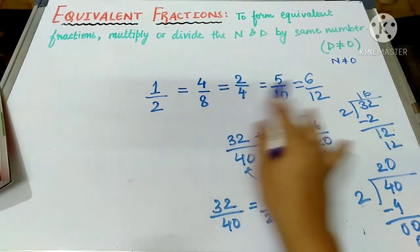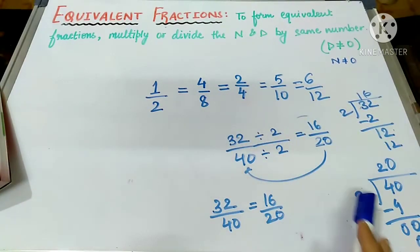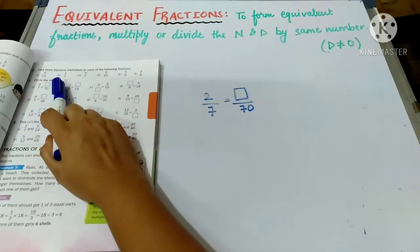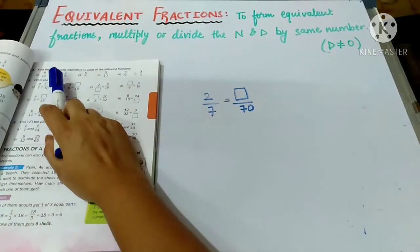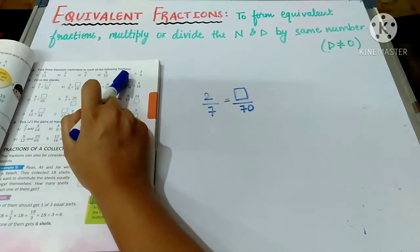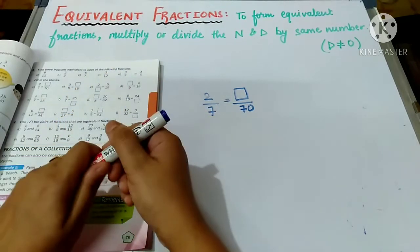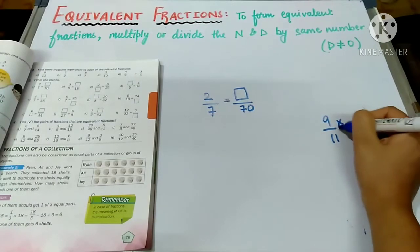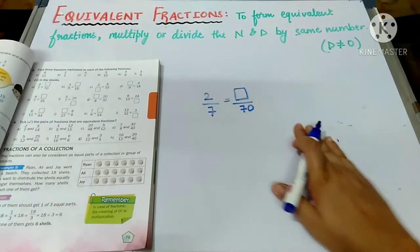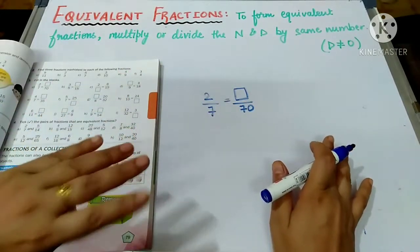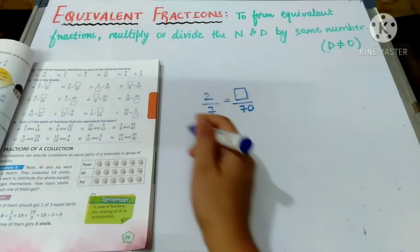If you want to make equivalent fractions, you can just multiply and write the equivalent fractions. In question number two, you have to find three fractions equivalent to each of the following fractions. You will write the fraction, take any number, and multiply it in the numerator and denominator to write the three equivalent fractions.